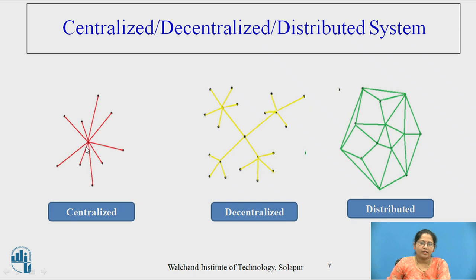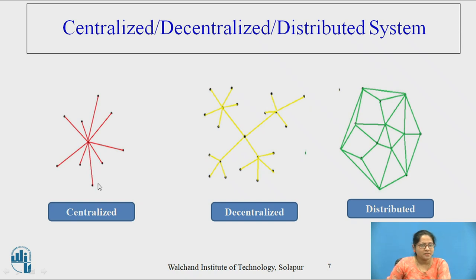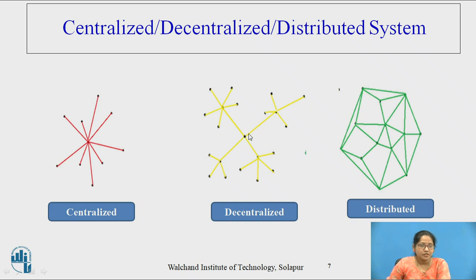The advantage of centralized is that it is easy to deploy and somewhat easy to maintain. But the main disadvantage is that if a single point failure occurs, no replica or copies of the data are available. Moving from centralized to decentralized, instead of a single point of authority, there are multiple authorities who are able to take decisions.